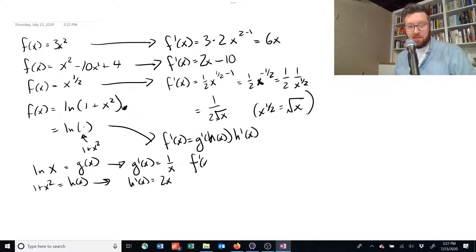So, f prime of x. The derivative of that is 1 over x. But, notice, we're supposed to put h of x in place of x. And h of x is equal to 1 plus x squared. So, we get that for the first component. And then h prime of x is just 2x.